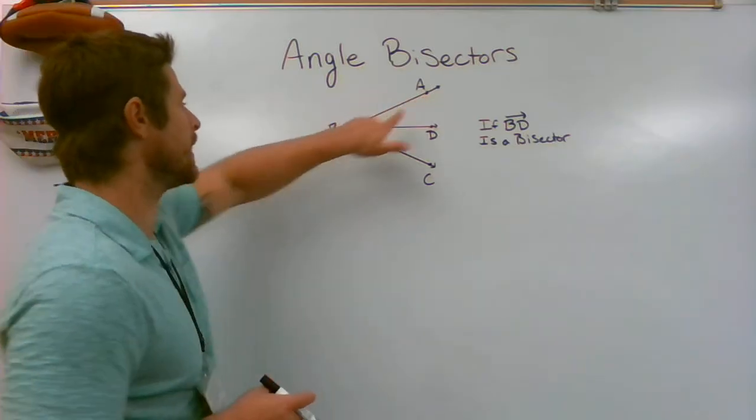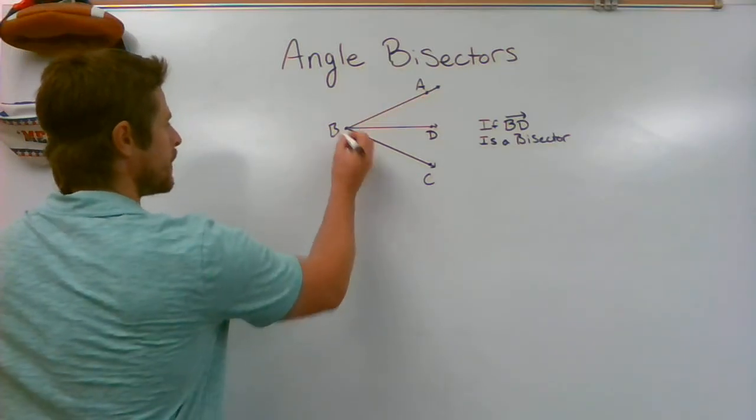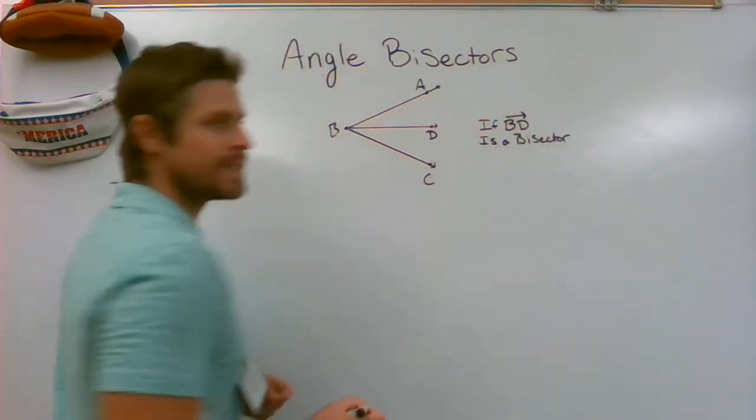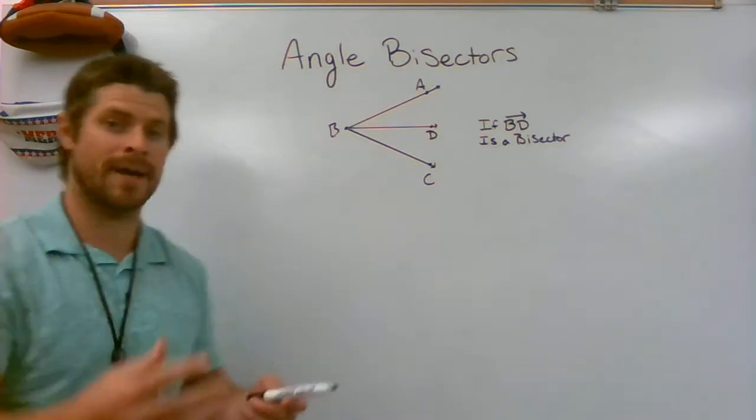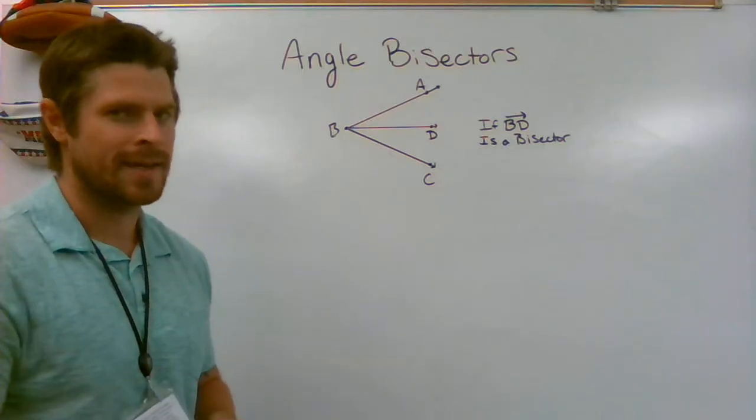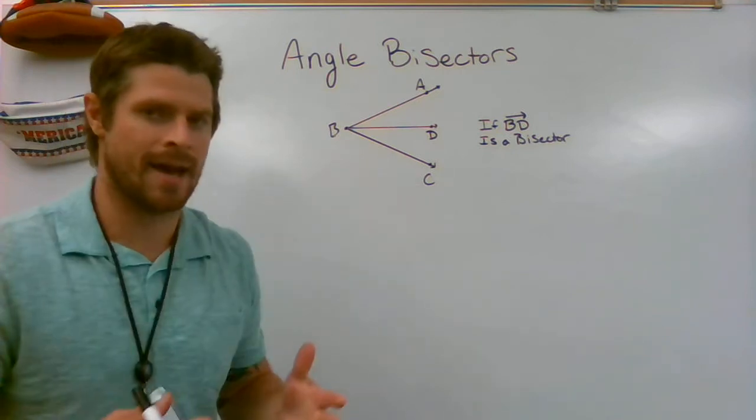So we've got angle ABC, which is broken up with ray BD. If ray BD is a bisector, the second that someone tells you that's a bisector, it's just a fancy way of saying it cut the overall angle, the large angle ABC, in half.